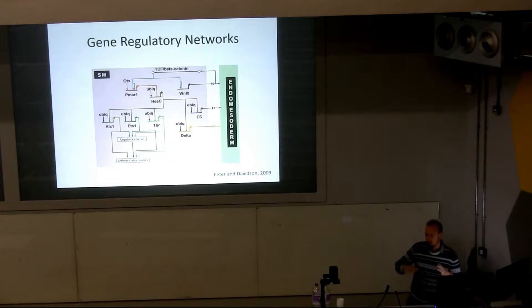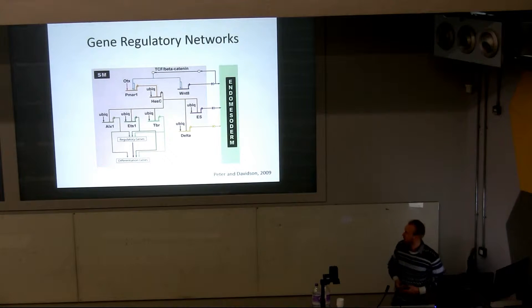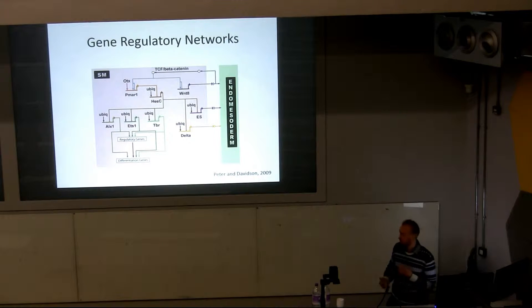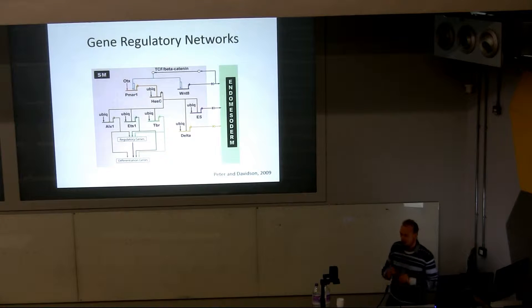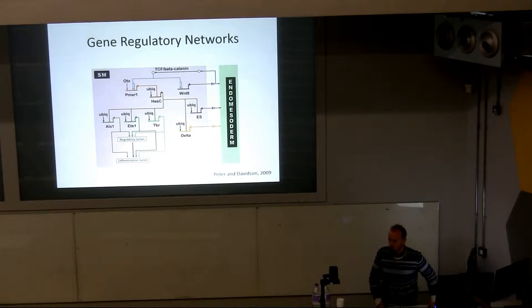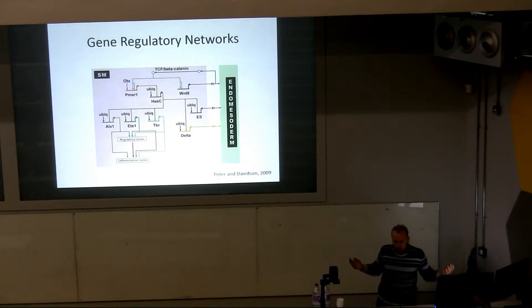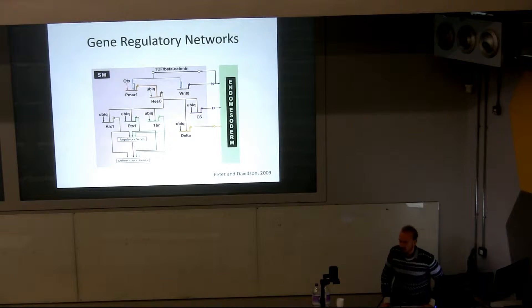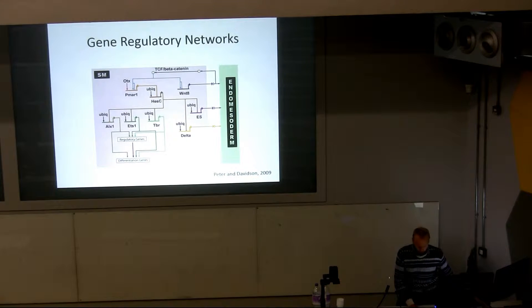First, I have to talk about what gene regulatory networks are. These are the interactions of numerous different genes in development that interact together to form the morphological structures we see through the regulation of proteins. Echinoids are the best, and it just so happens that the best gene regulatory network for development is known in echinoids, specifically the purple sea urchin, Strongylocentrotus purpuratus.